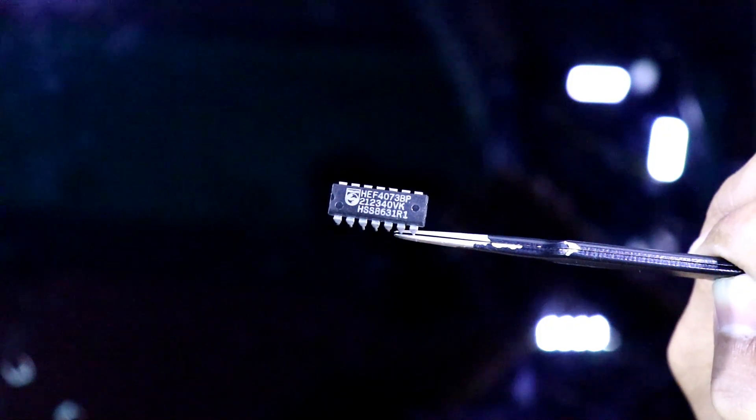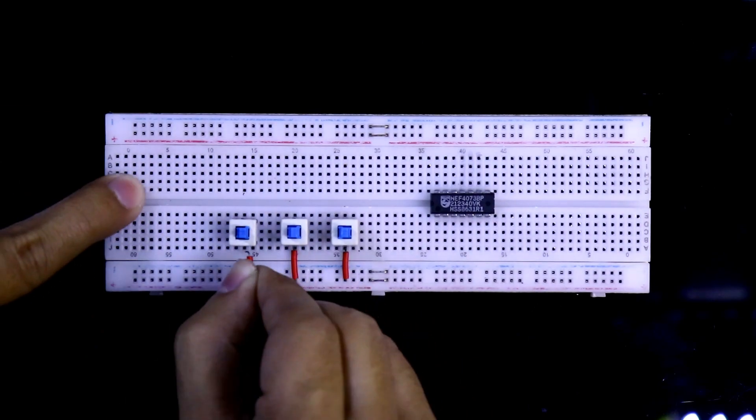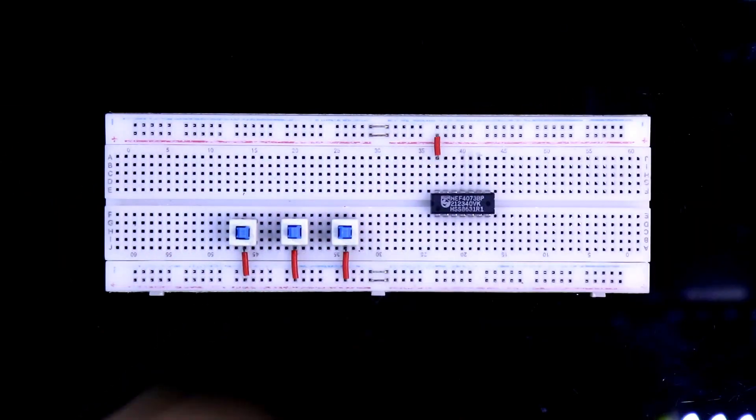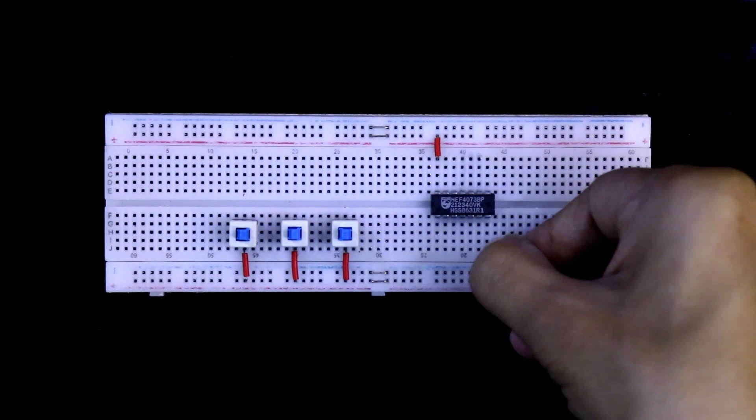IC 4073. Putting the switches—one side of the switch is connected to plus VCC. Pin 14 is connected to plus VCC. Pin number 7 is connected to ground.